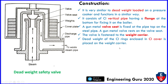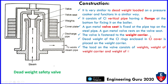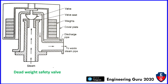A dead weight of cast iron rings enclosed in a cast iron cover is placed on the weight carrier. Here we can see the cover plate, the weight, and the cast iron cover. The load on the valve consists of the weights, the weight of the weight carrier, and the weight of the valve itself. This is the construction of the dead weight safety valve.